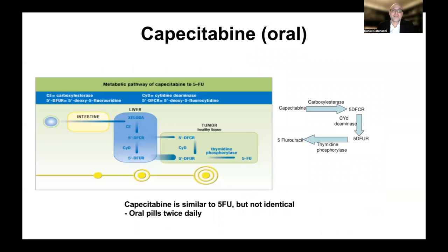Capecitabine is an oral version of 5-FU. It is taken orally, absorbed through the intestine, and converted to byproducts that enter cells - whether tumor or healthy cells. Inside the cells, an enzyme called thymidine phosphorylase converts it to 5-FU, which then proceeds accordingly. Capecitabine gets converted to 5-FU and acts like 5-FU, but it doesn't have to be given as a continuous infusion - it's given orally twice a day, which is one of its benefits. The side effect profiles are slightly different and must be considered when deciding on therapy.